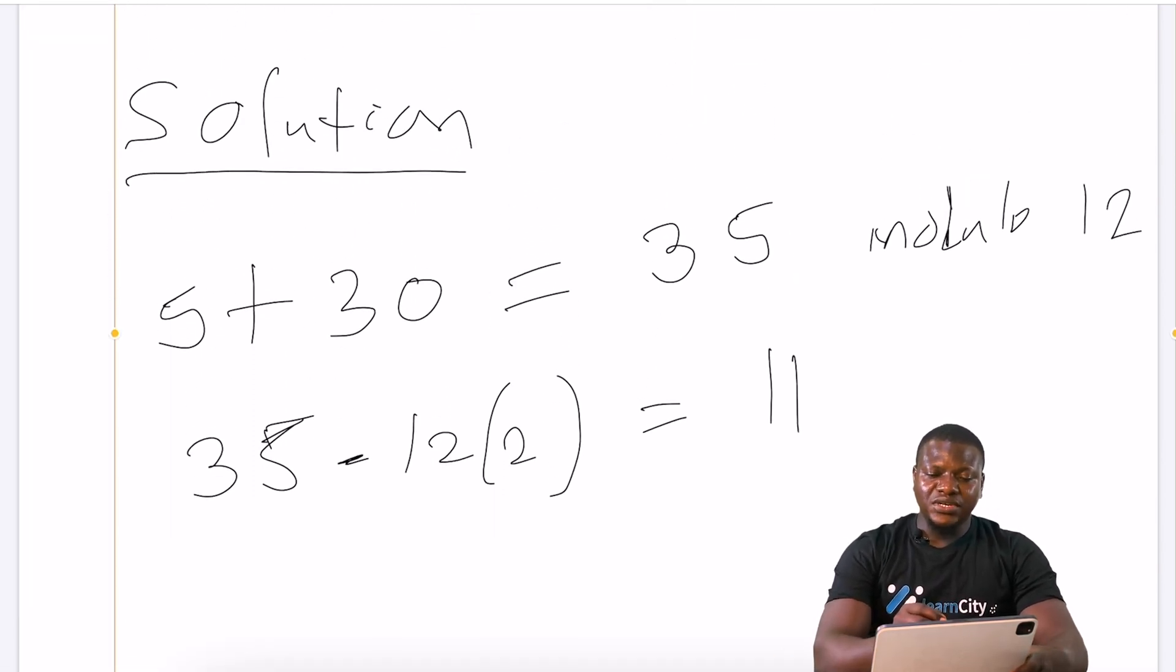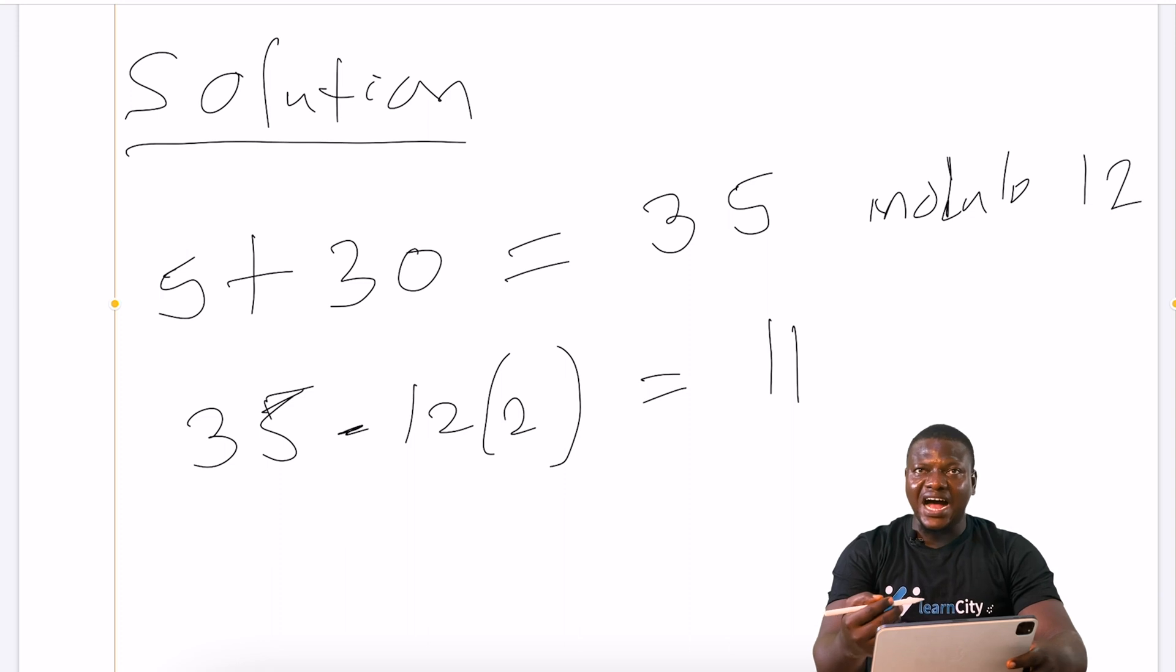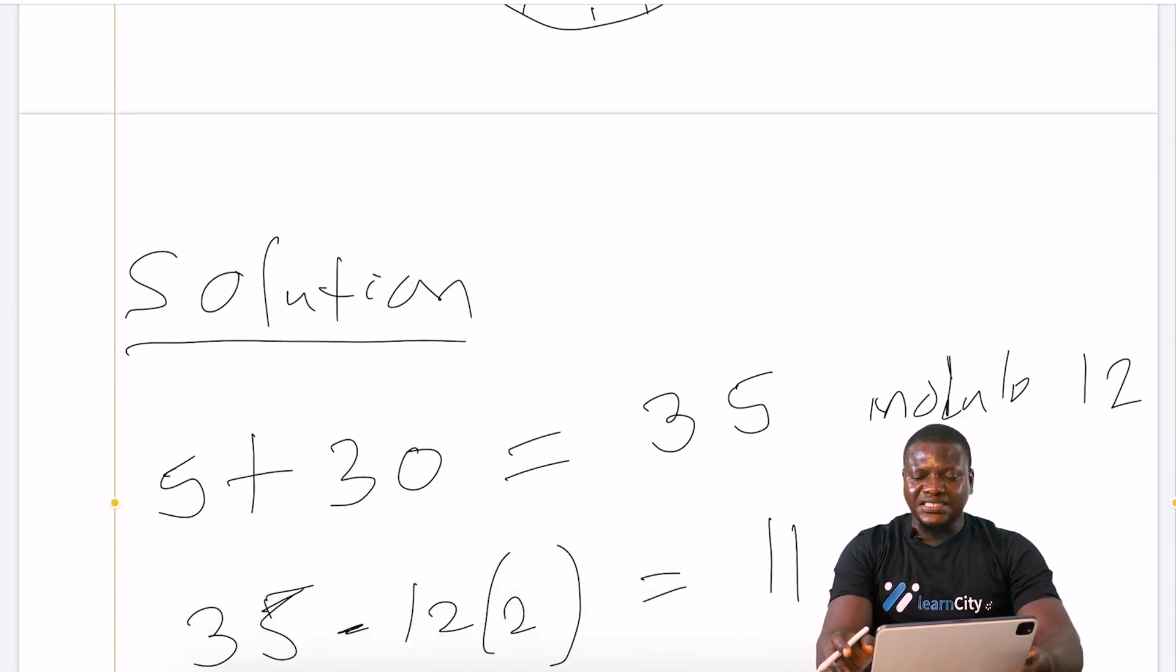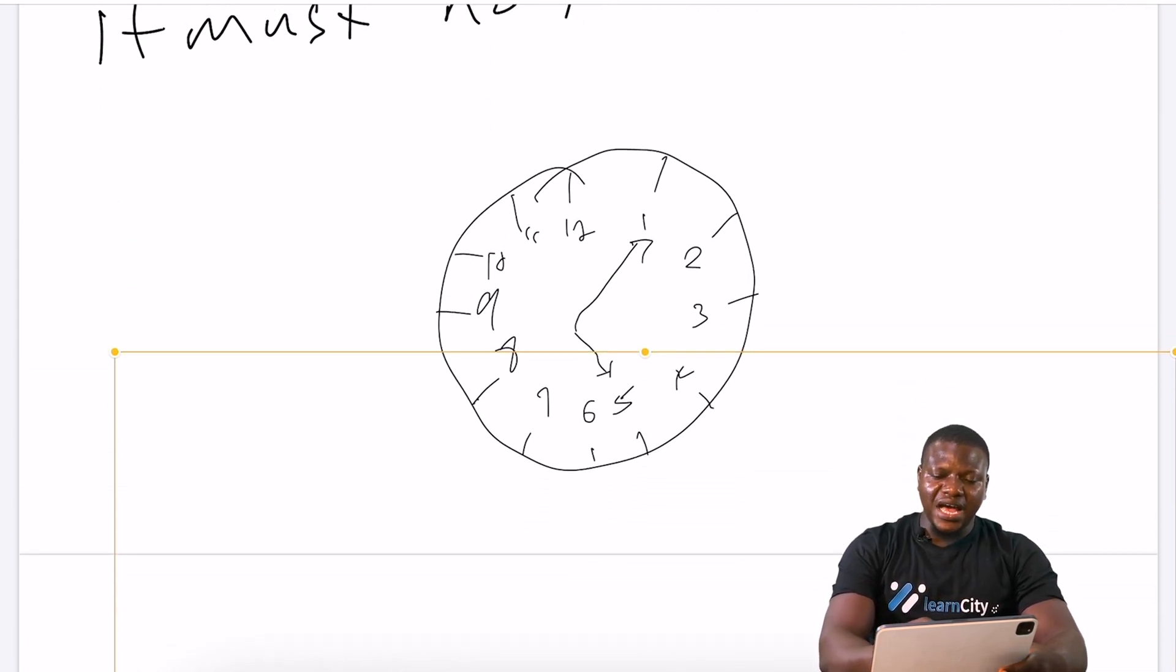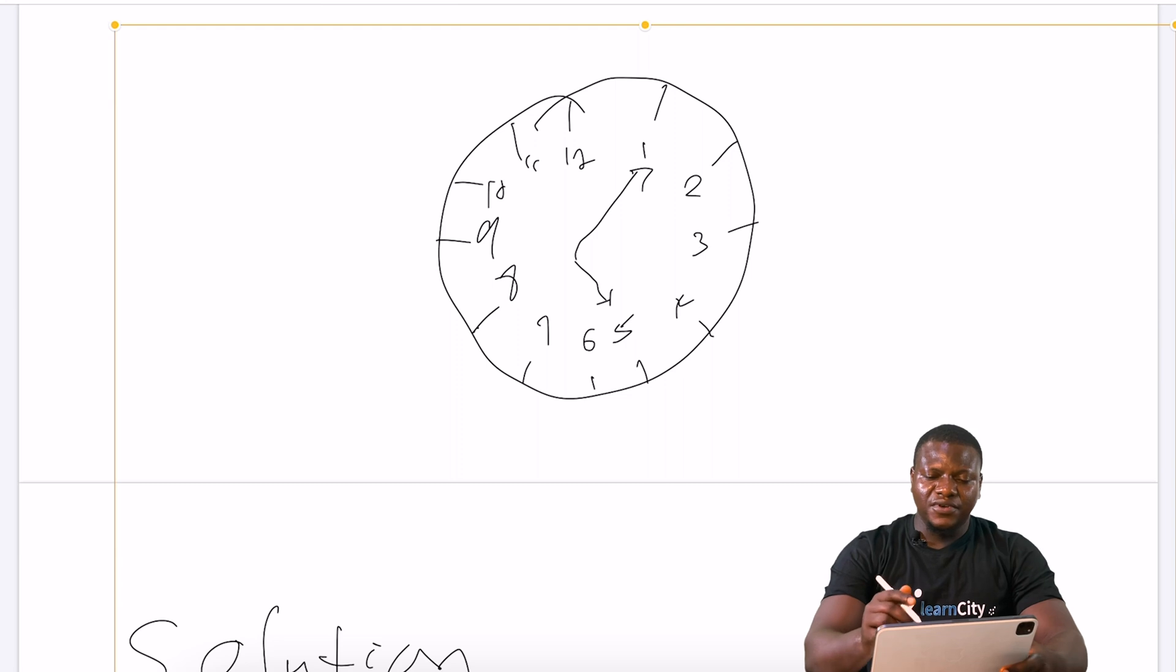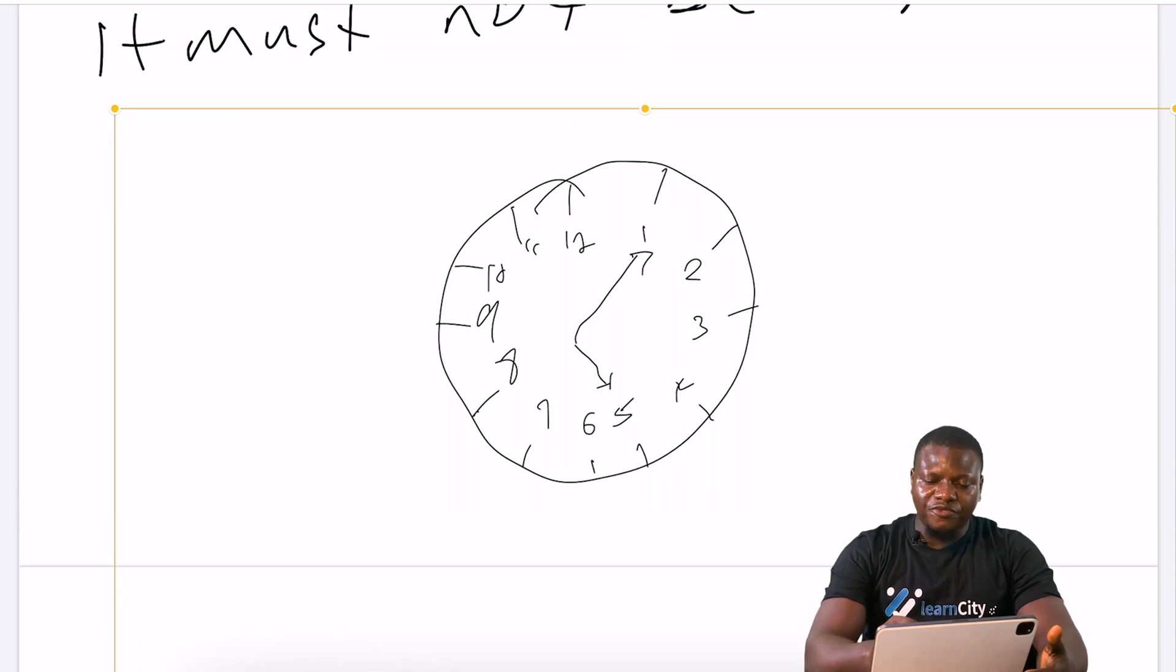So from here now, that means after 30 hours, my short hand will be pointing on 11. Instead of being pointing on 5, my short hand will be pointing on 11. Let us take the practical one. If it is pointing on 5, then I'm going to have from 5 to 6...